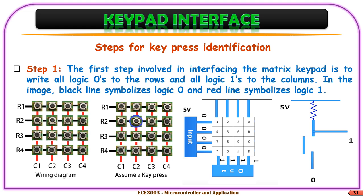First, let us go through a basic understanding. We connect all the rows and columns: we connect all the rows as input and all the columns as output. We do that by connecting through IO ports. We take 4 IO port pins of port 1 and connect all the rows R1, R2, R3, R4 as input ports, and connect port 0 pins 0 to 3 as output pins connecting to column 1, column 2, column 3, and column 4.